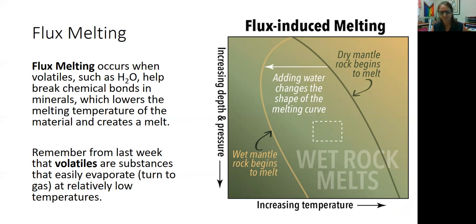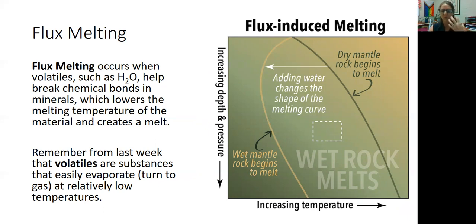Coming back to this graph: with flux melting, the pressure can stay the exact same and the temperature can stay the exact same. The only thing that changes is that the rock is able to melt at that pressure and temperature because water or some other volatile is added. So that boundary between when a rock will melt and when it will not within this pressure-temperature space changes, but the pressure and temperature of the rock itself does not change.